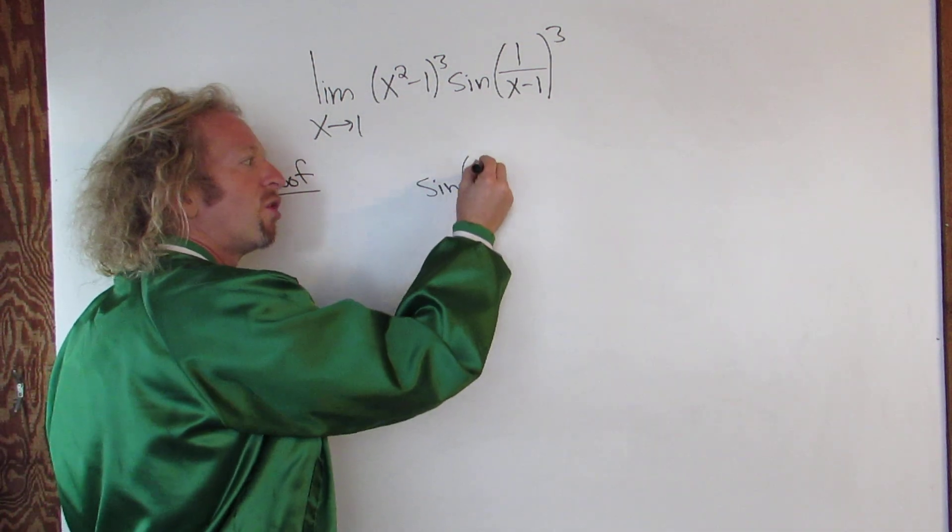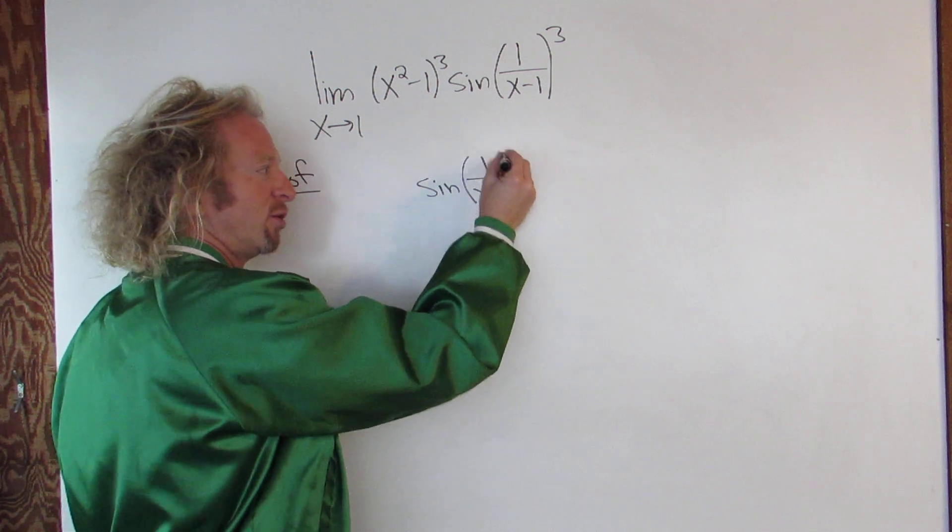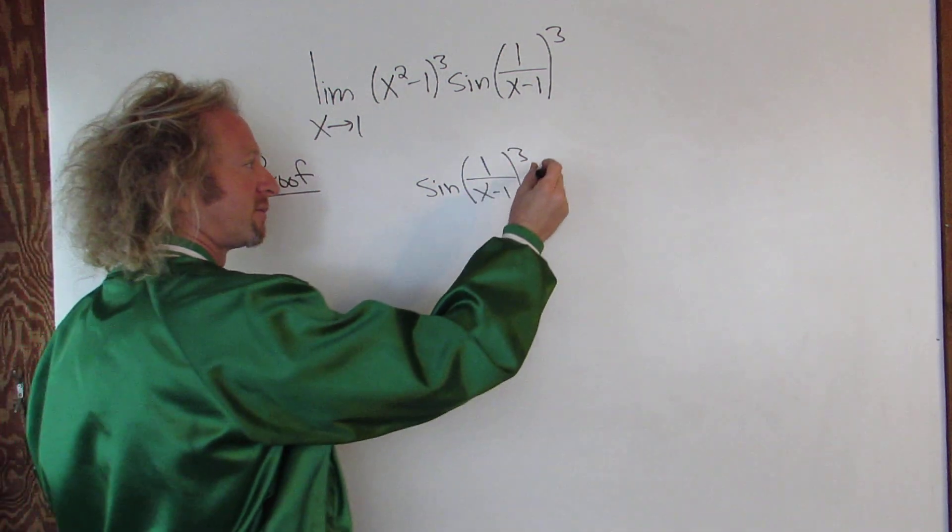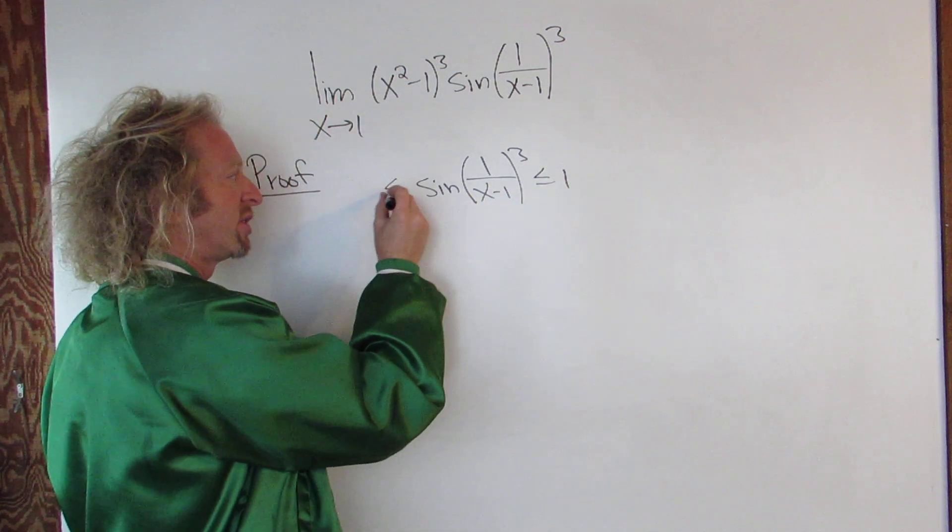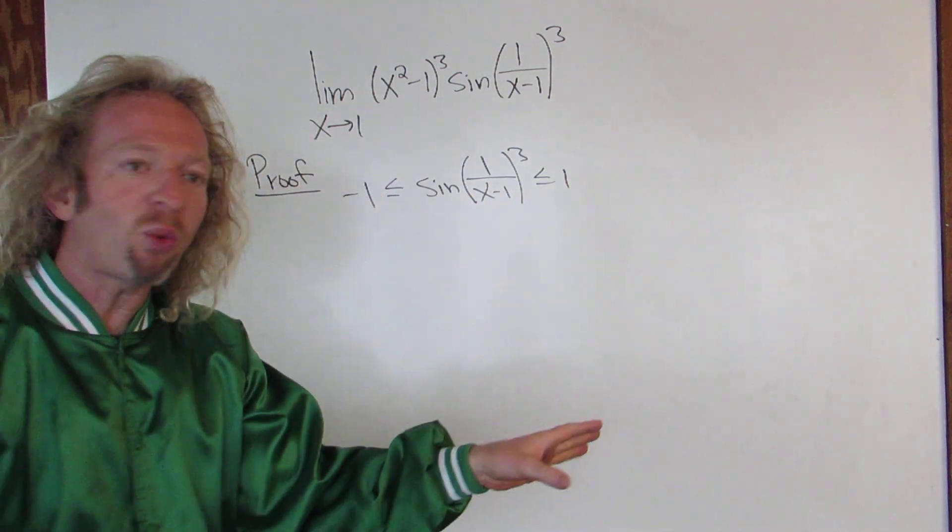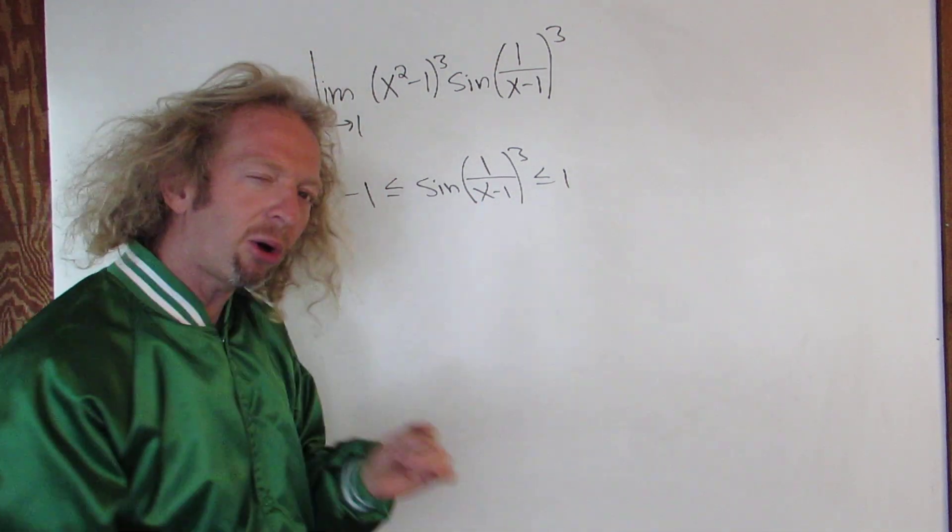So the sine of 1 over (x minus 1) cubed. This is less than or equal to 1 and it's greater than or equal to negative 1. Always, no matter what. The sine function is always bounded by 1.